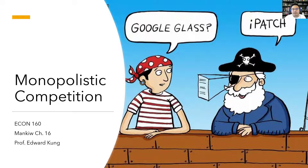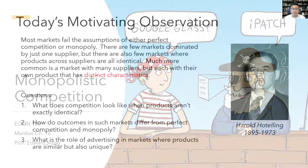Hello again, Econ 160. This is Professor Kung here, coming to you with another video lecture. As I record this, it's April 3rd, 2020, and the number of confirmed COVID-19 cases in the U.S. has risen to over 250,000. It was just about 145,000 just three days ago, so I'm hoping and praying for your health. Please stay safe and practice responsible hygiene and social distancing. The topic for today's lecture is monopolistic competition.